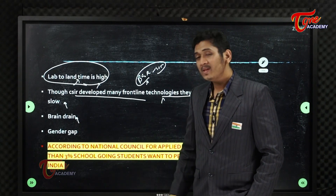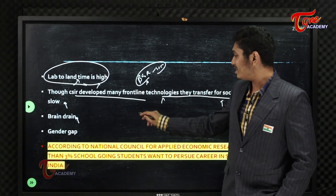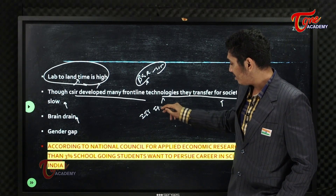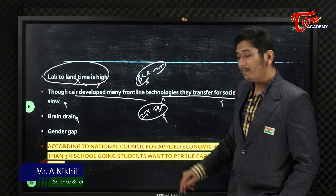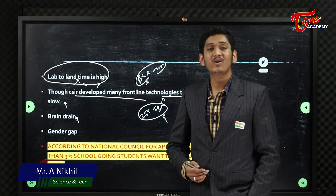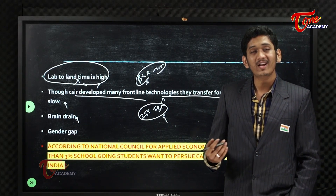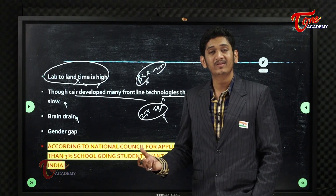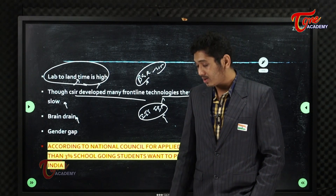Brain drain is a challenge. Many graduates from premier institutions like IITs and IIMs leave the country entirely. That knowledge and technology then benefits other nations like the United States rather than India. This is a significant challenge.